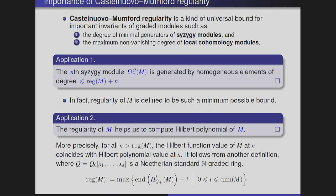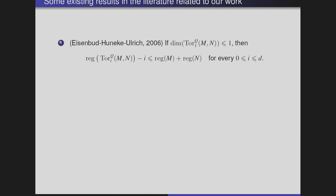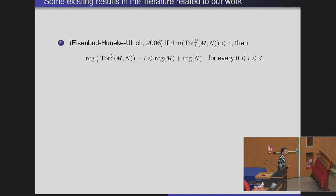There are many results in this theme. For example, it is known due to Cutkosky-Herzog-Trung and Kodiyalam that the regularity of powers of ideals is asymptotically given by a linear function — that is, a polynomial of degree one — where the leading coefficient can be described as an invariant of the ideal. But the constant term and stabilization index are not known, and people are studying various classes of ideals to describe those. Here I will recall a few results related to our research work.